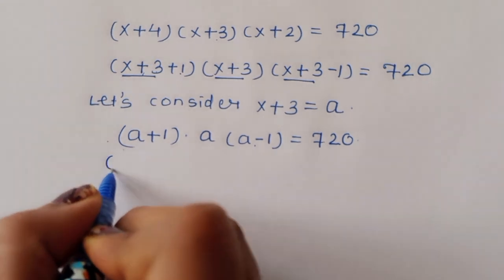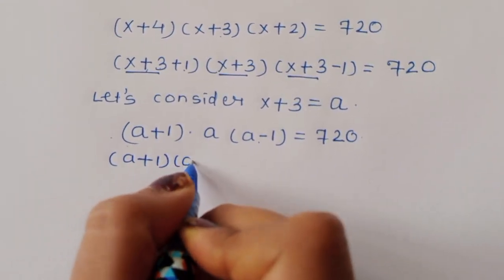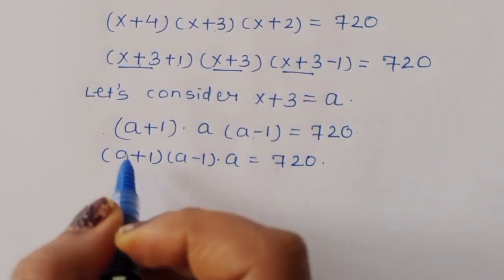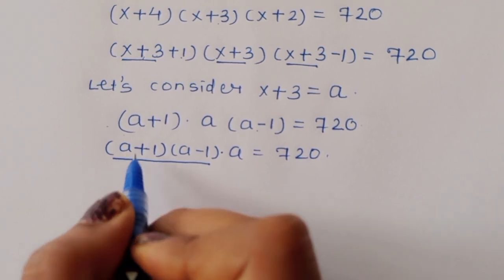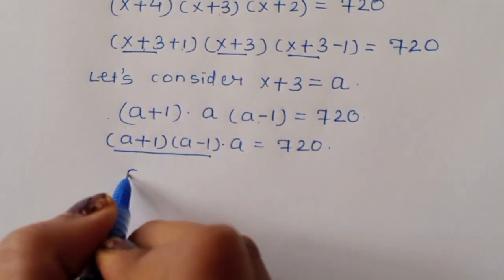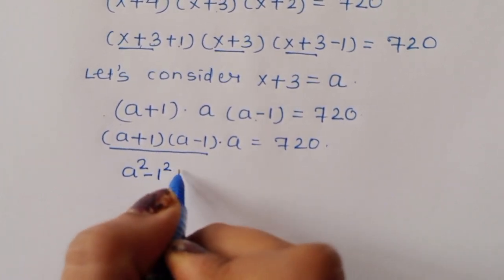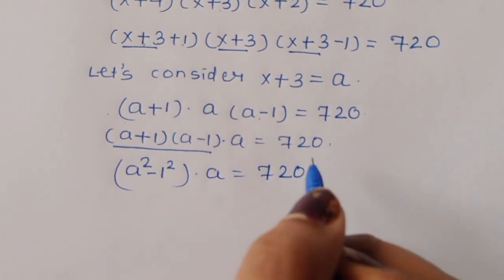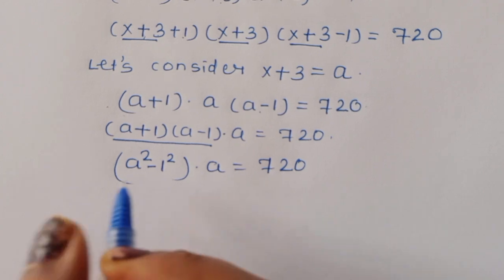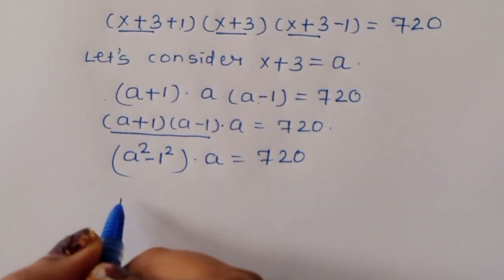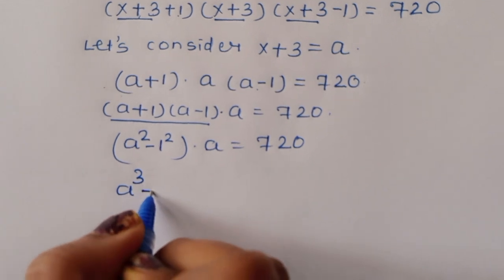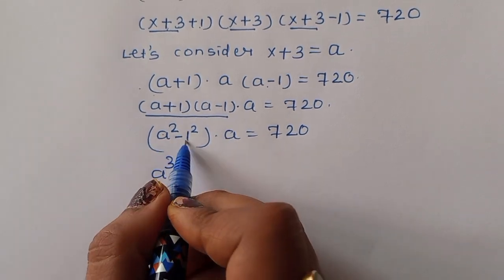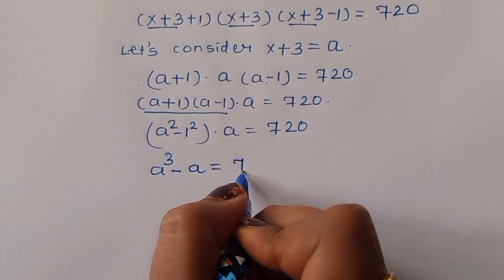With the substitution, we can write (a+1)(a)(a-1) = 720. Rearranging, (a+1)(a-1) times a gives us (a²-1) times a, which equals a³ minus a = 720.